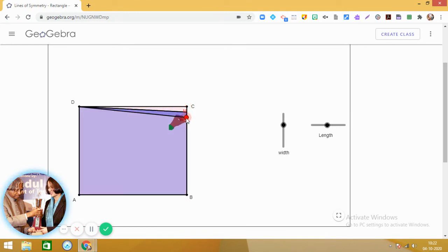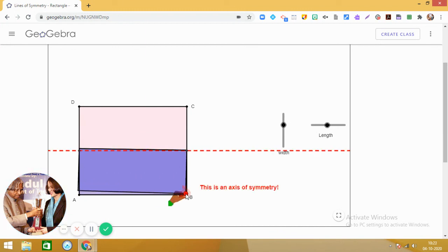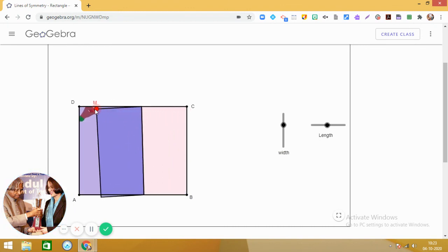So we see that in a rectangle we have two lines of symmetry only. So this is the first one and this is the second one. I hope it is clear to all of you.